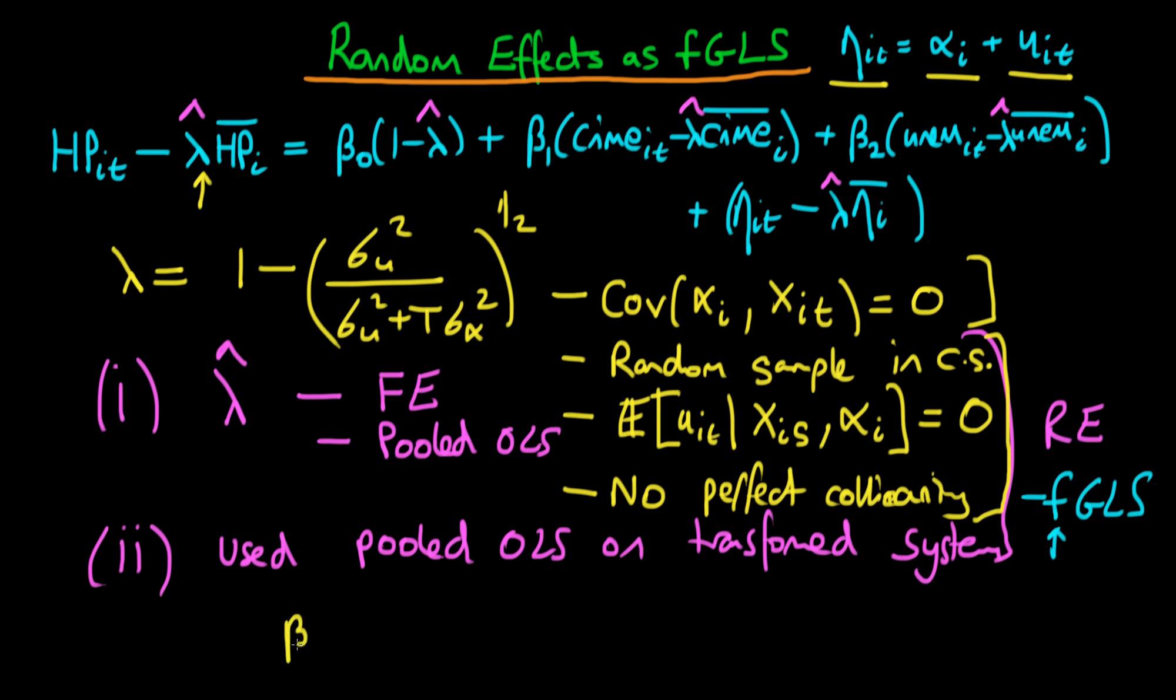And if each of these four assumptions are satisfied, then beta hat random effects tends in probability to the true population parameter beta. So that means as our sample size tends to infinity and we're considering t being fixed, then our random effects estimates actually are centered on the true population parameters beta, and as our sample size increases indefinitely, we actually converge to that particular parameter beta which is in the population.